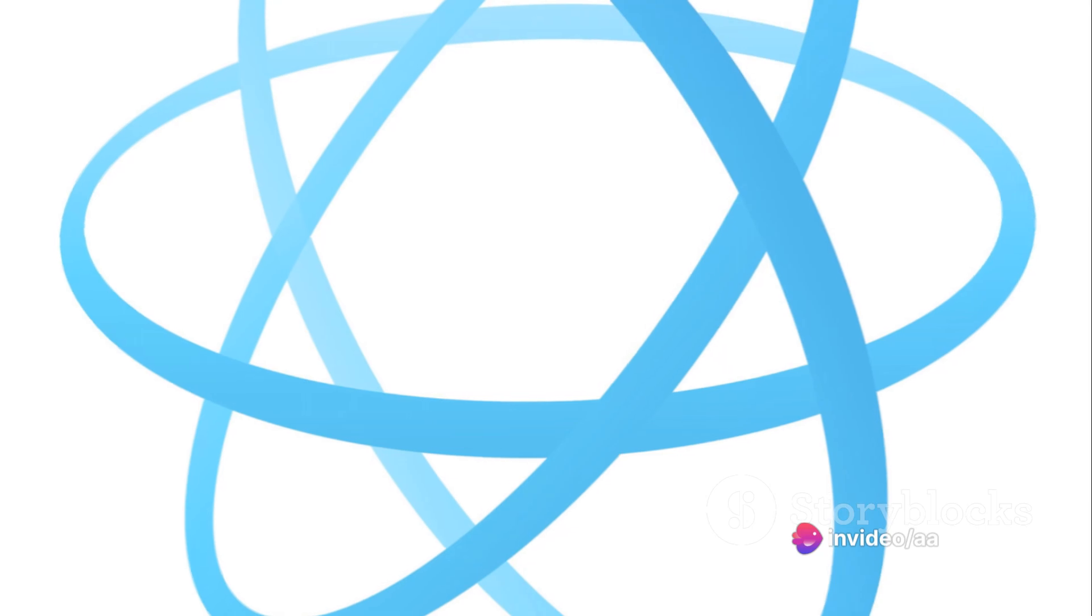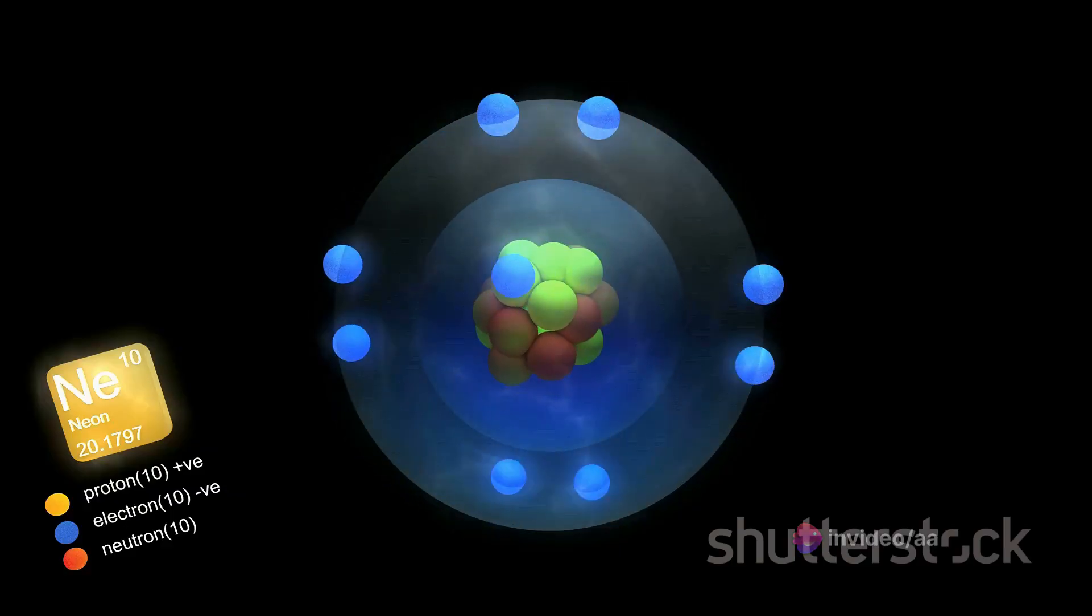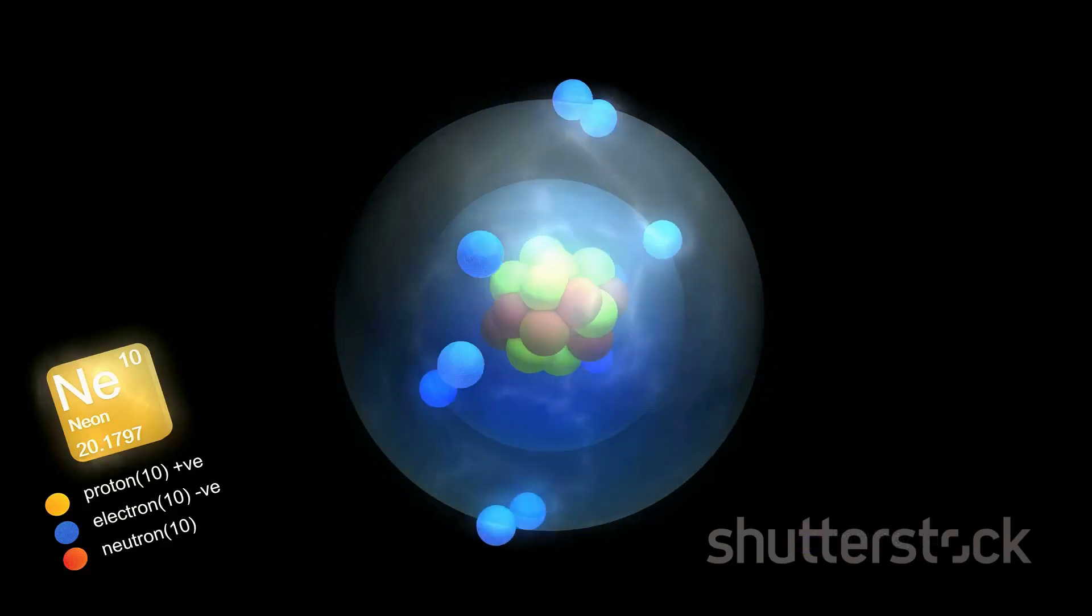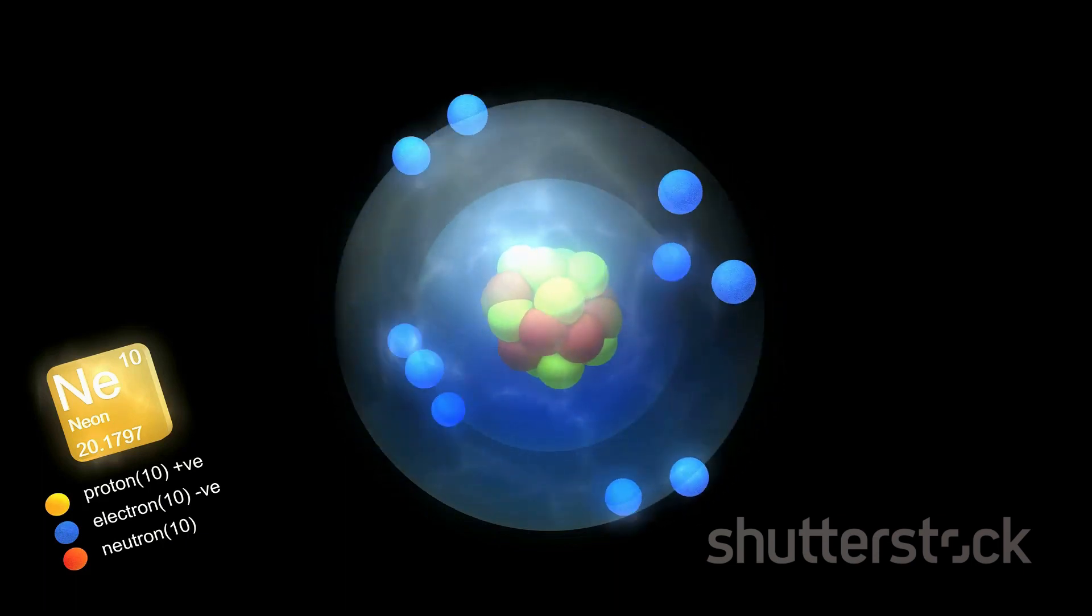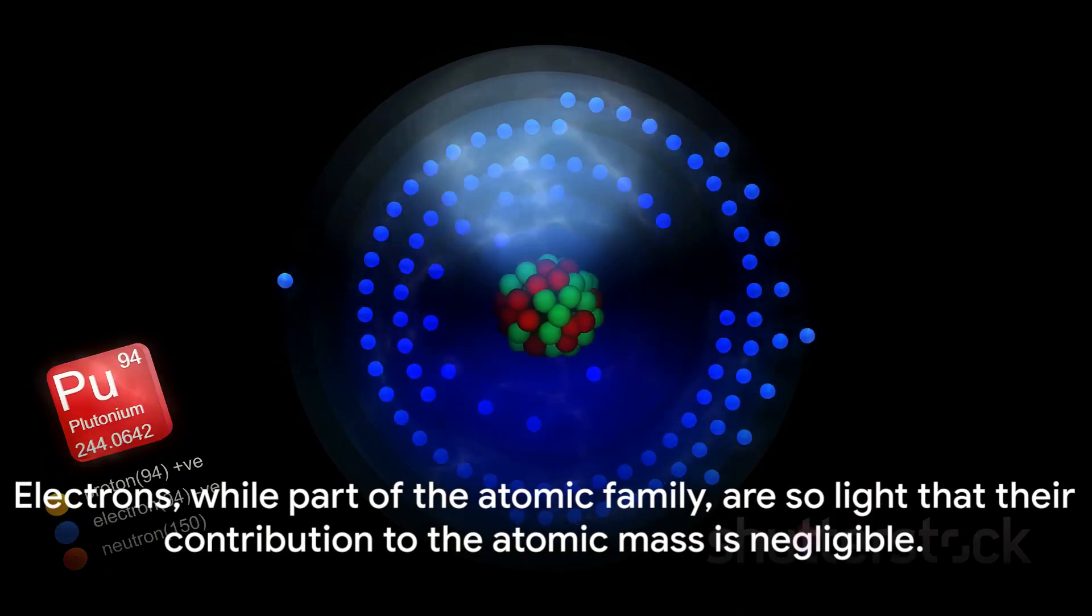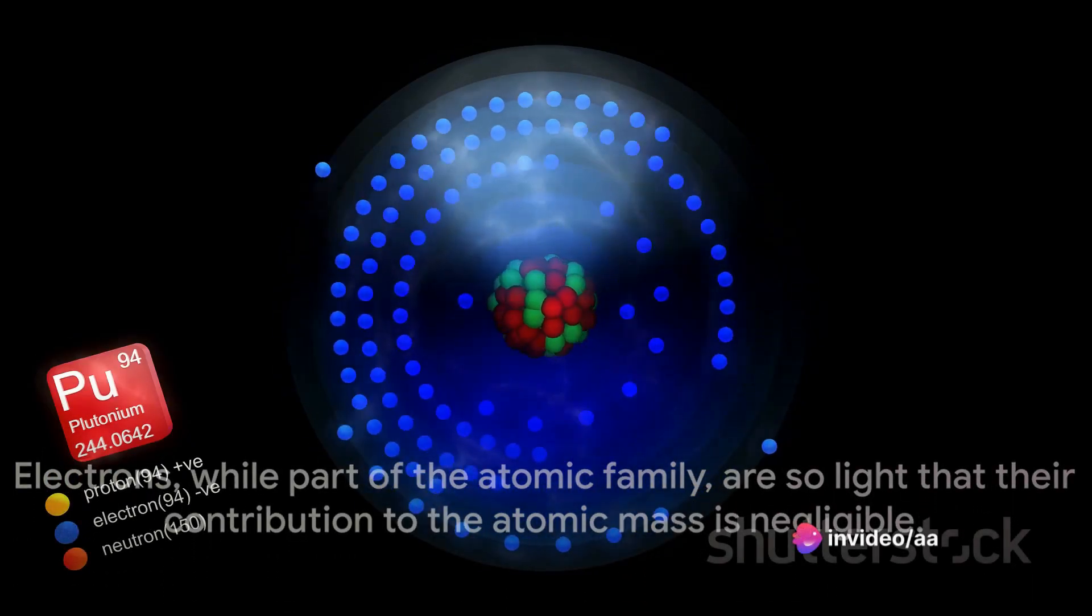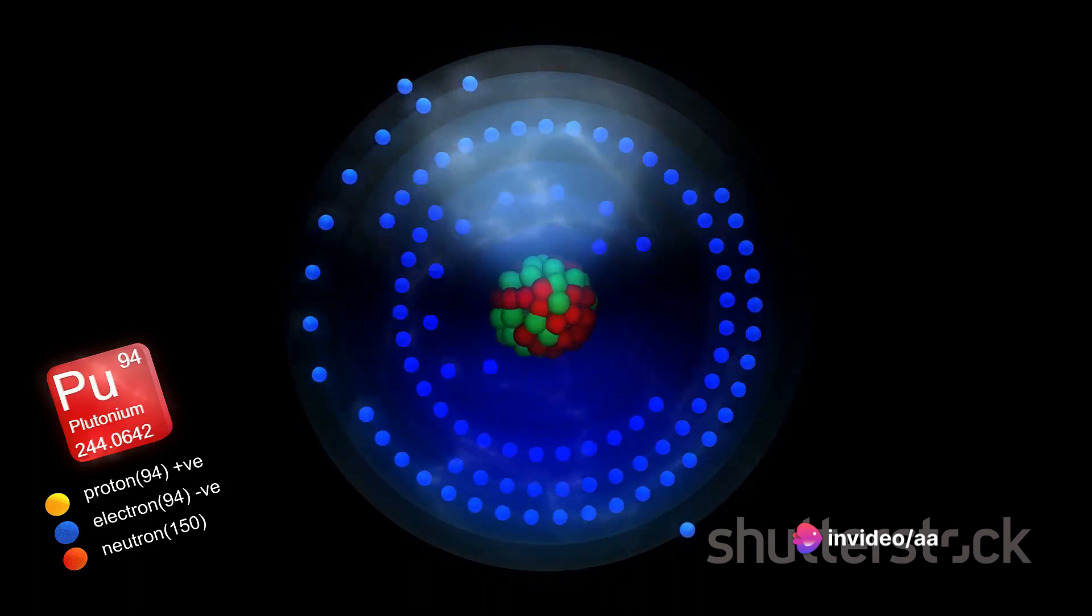The atomic mass is the combined weight of this entire system. It's the sum of the protons and neutrons, the particles that contribute to an atom's weight. Electrons, while part of the atomic family, are so light that their contribution to the atomic mass is negligible.